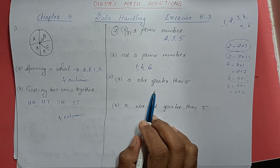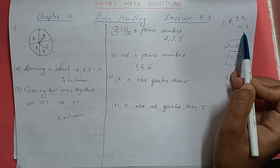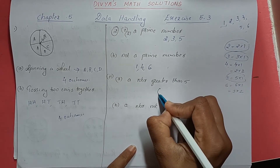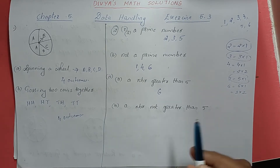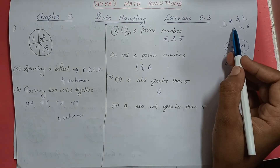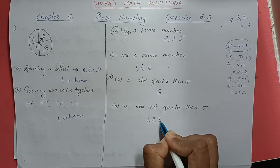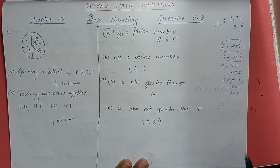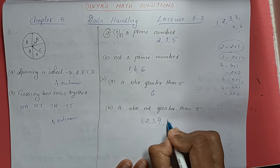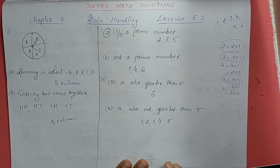Next, a number greater than 5 — only 6 is greater than 5. Then, the outcome of not getting a number greater than 5: numbers not greater than 5 are 1, 2, 3, 4. But 5 is also not greater than 5, so we include it too. So 1, 2, 3, 4, 5 — there are five outcomes for not getting a number greater than 5.